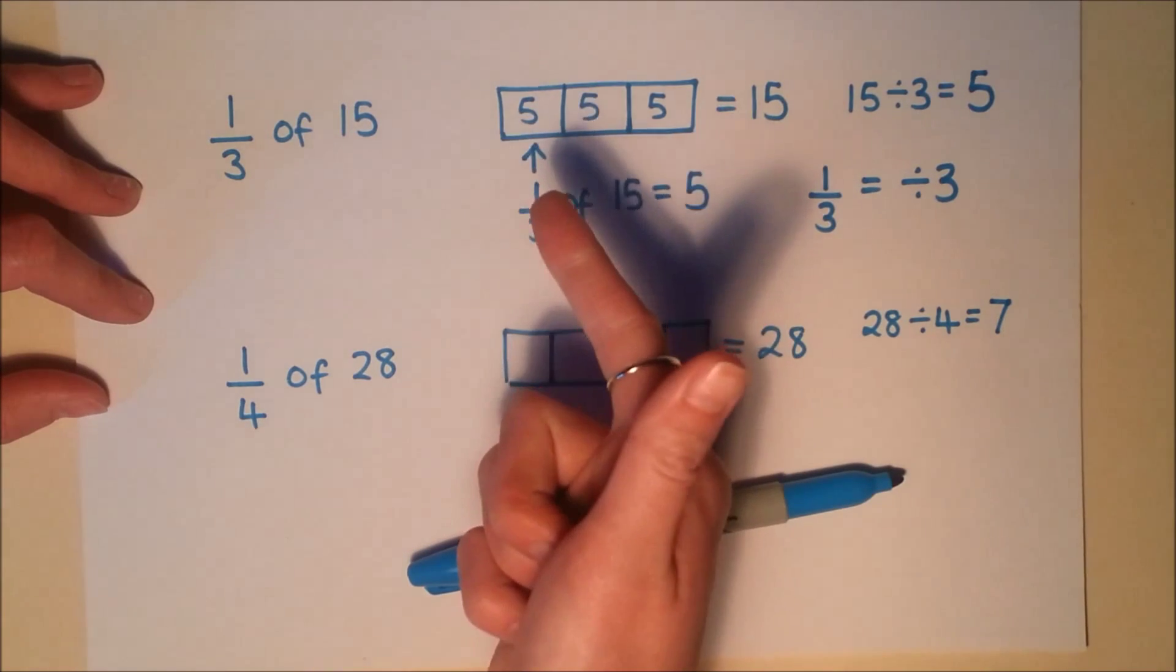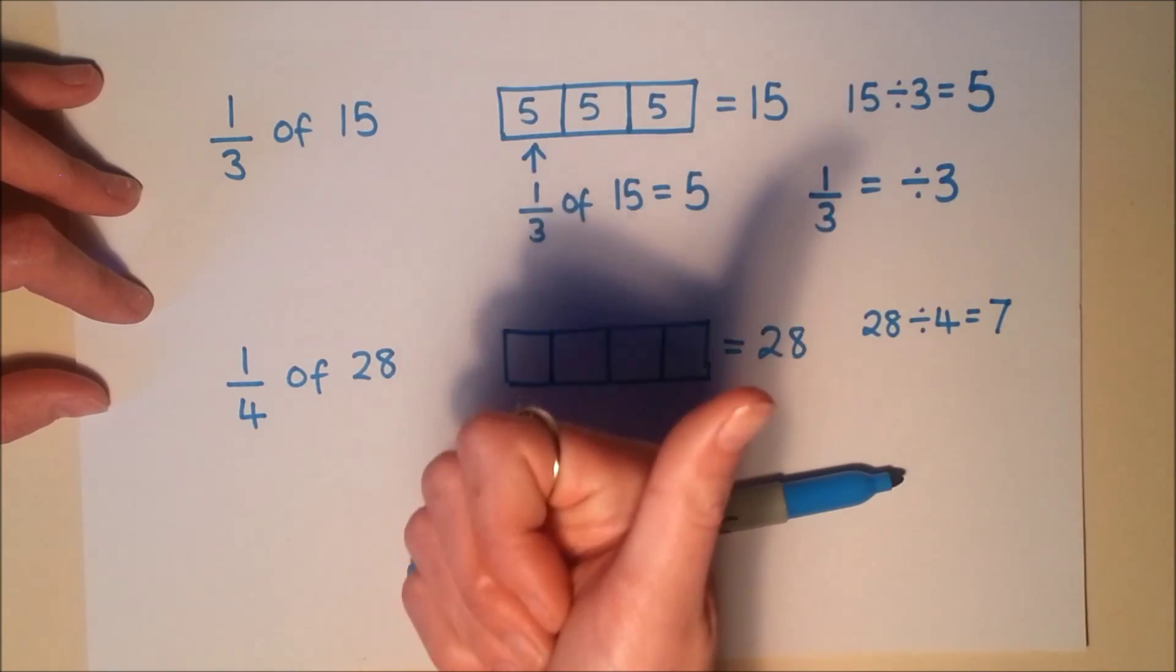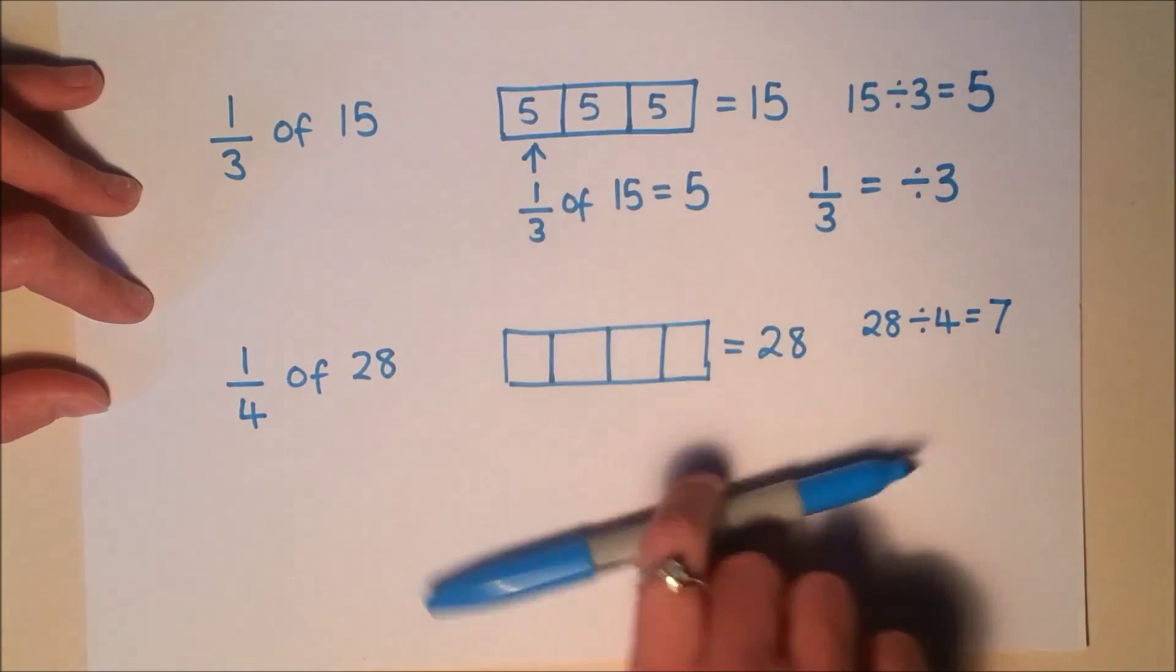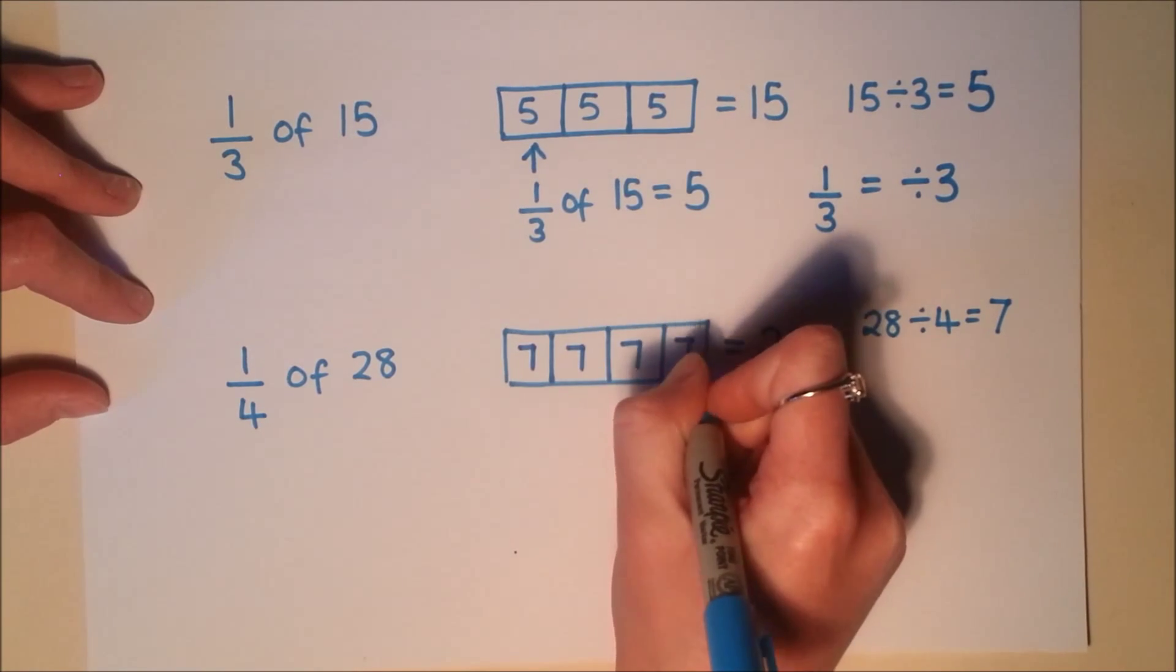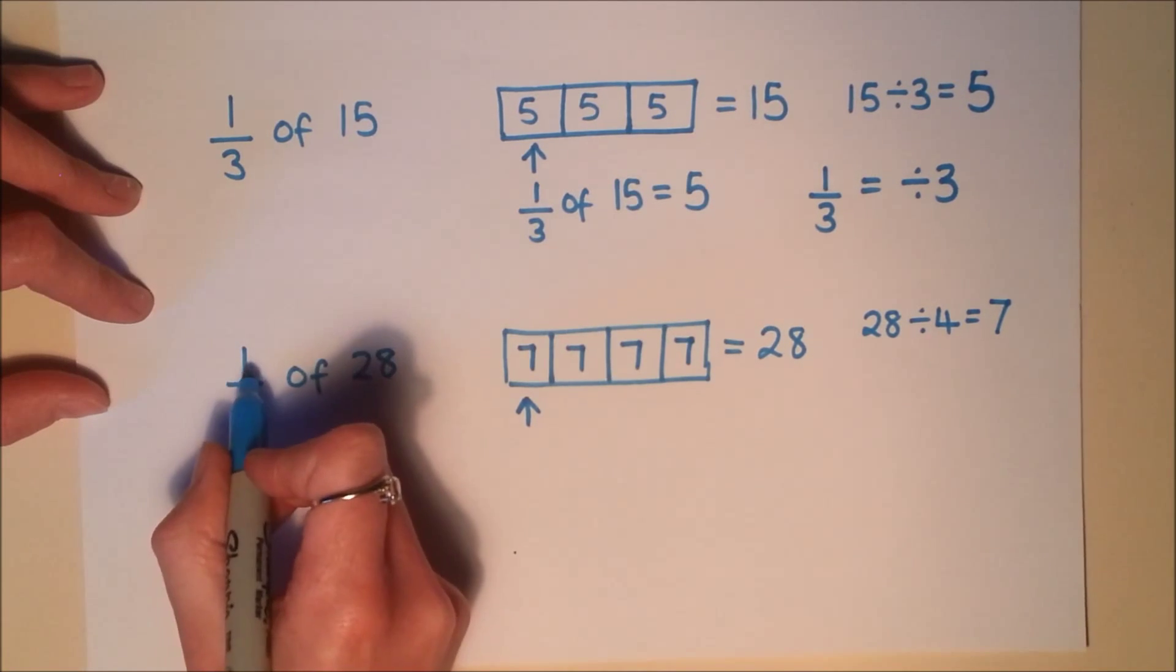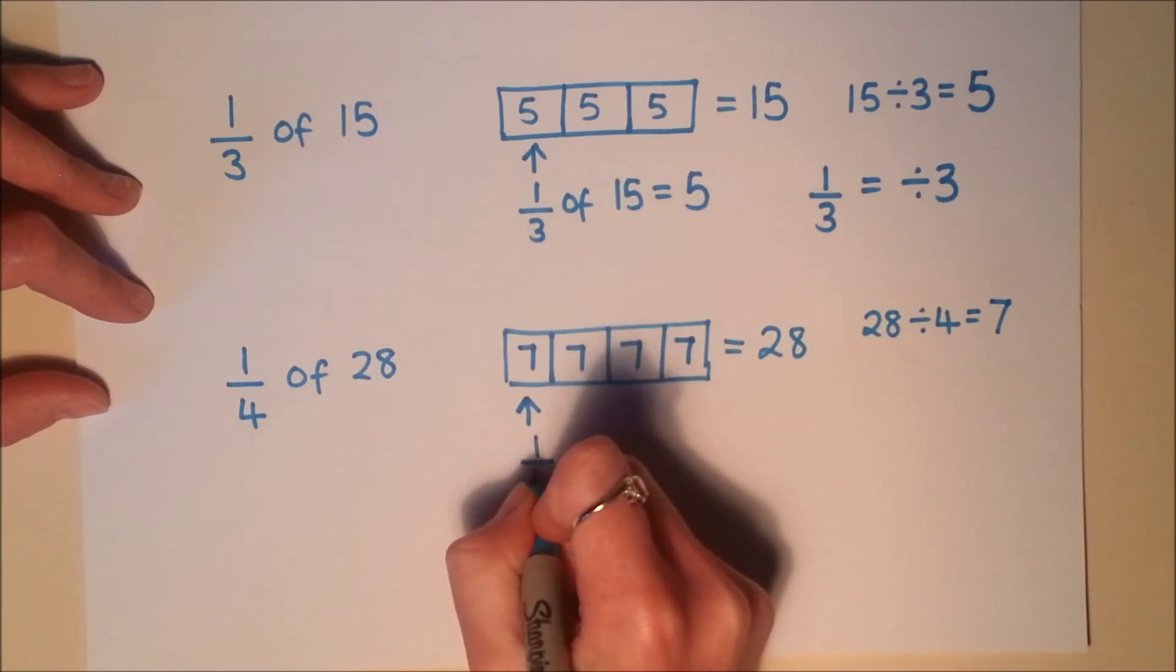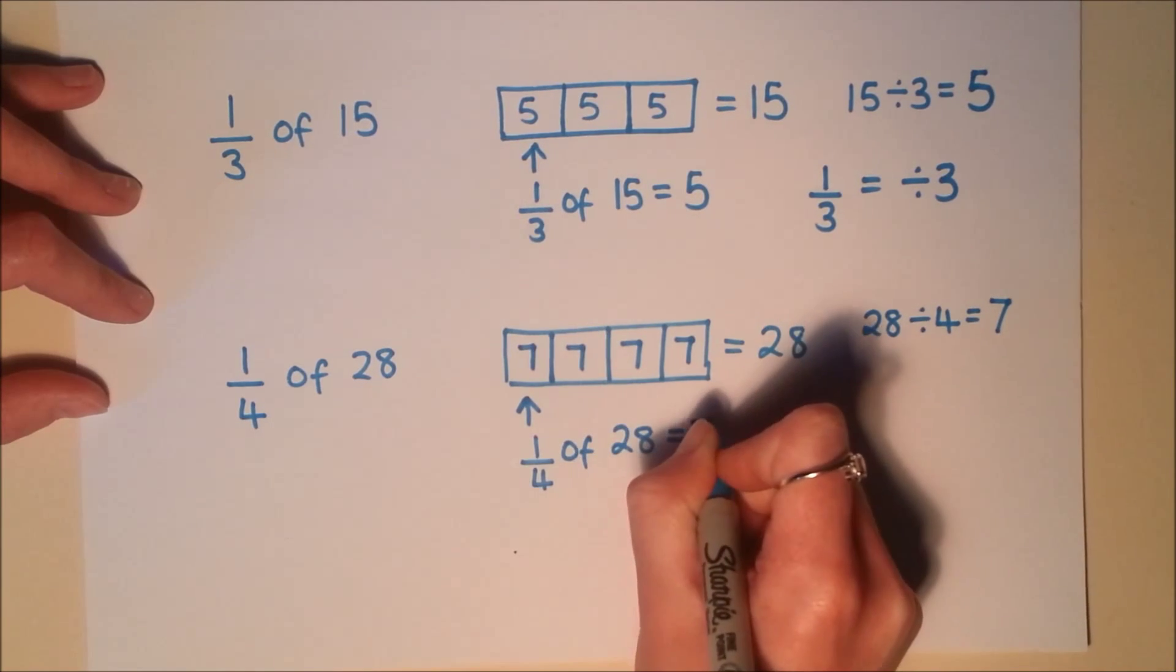So 4, 8, 12, 16, 20, 24, 28. So you can work out that each one of these pieces is worth 7. I'm just after 1 piece here because my numerator is 1. So I know that 1 quarter of 28 is 7.